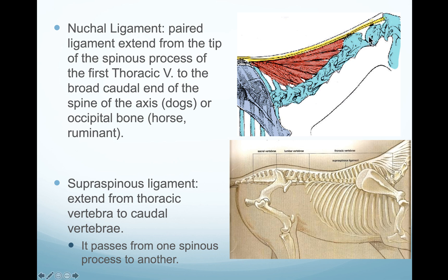So to clarify: in dogs the nuchal ligament extends from the spinal process of the thoracic vertebra and ends at the axis, whereas in the horse and ruminant it extends toward the occipital bone. In dogs it extends from the first thoracic toward the axis only, while in horses and ruminants it reaches the occipital bone.